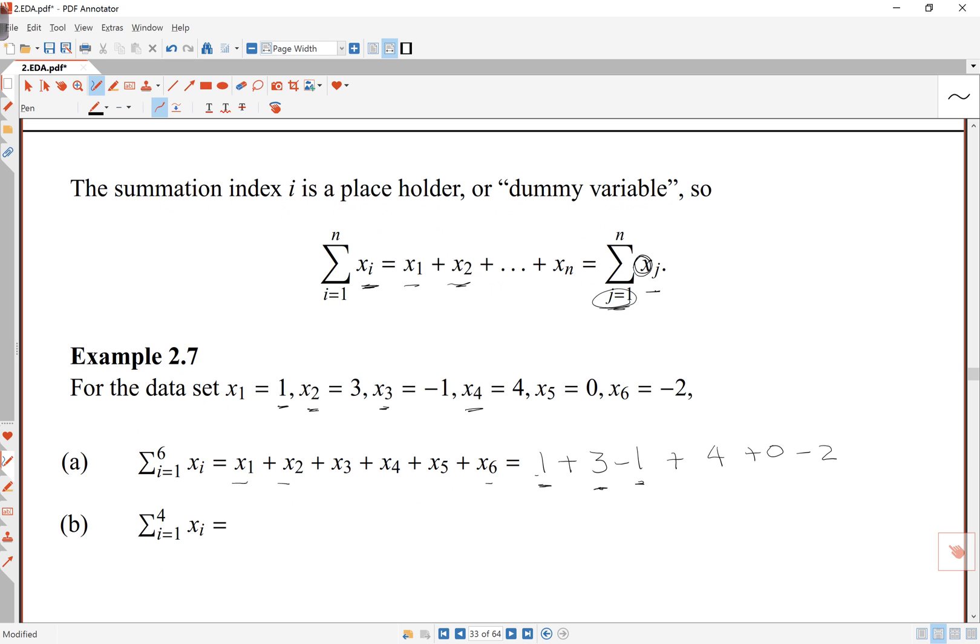x4 is 4, x5 is 0, and then x6 is negative 2. So if I add all this up here, then the ones cancel off, and I get 7 minus 2 is equal to 5.